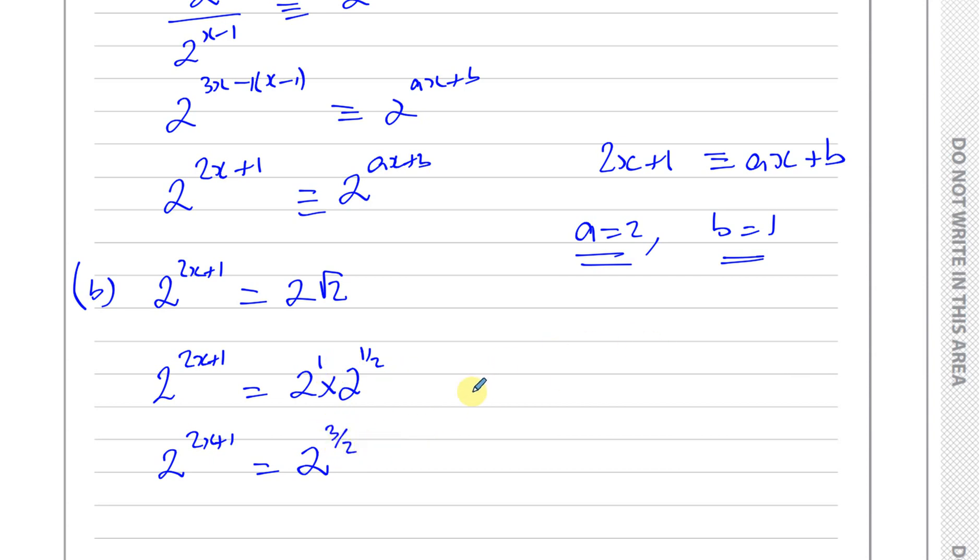Therefore, if 2 to the power of something equals 2 to the power of something, those two somethings must be the same. That means 2X plus 1 must equal 3 over 2.